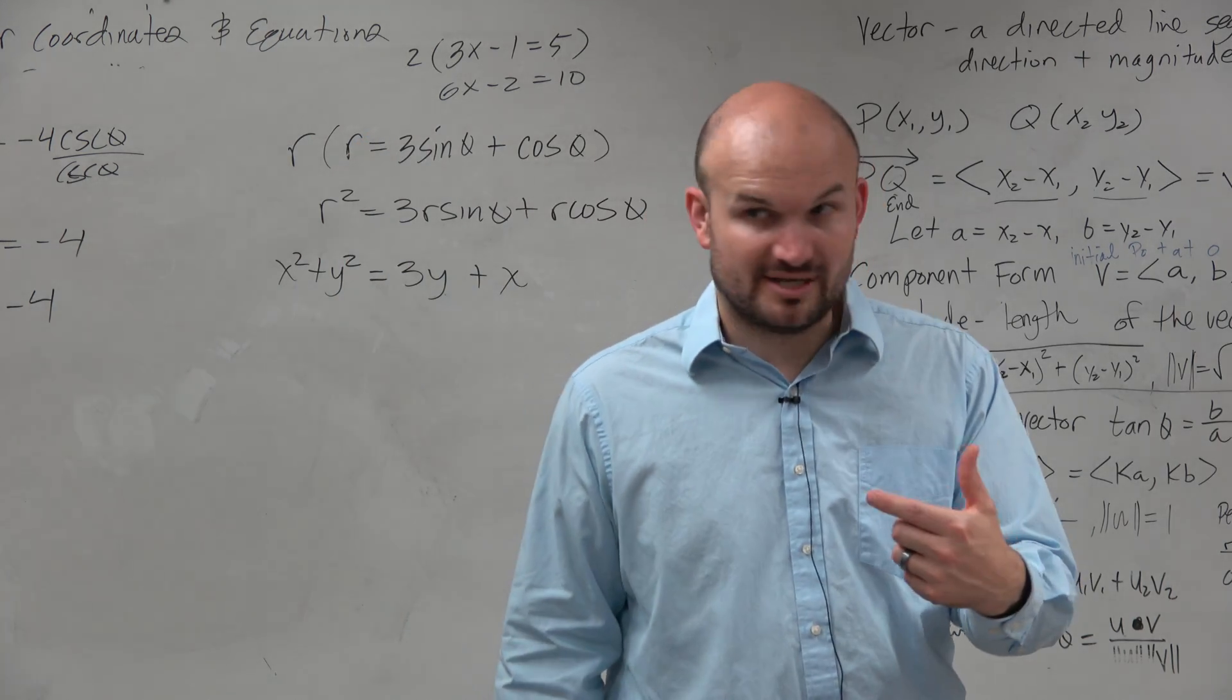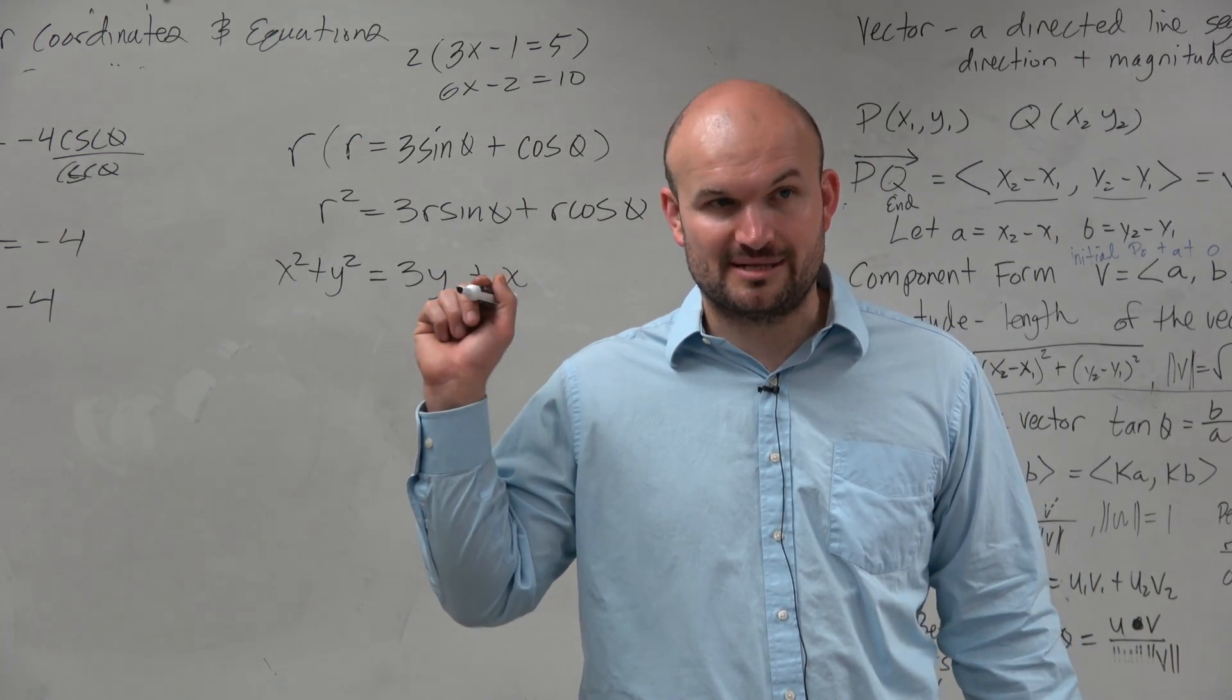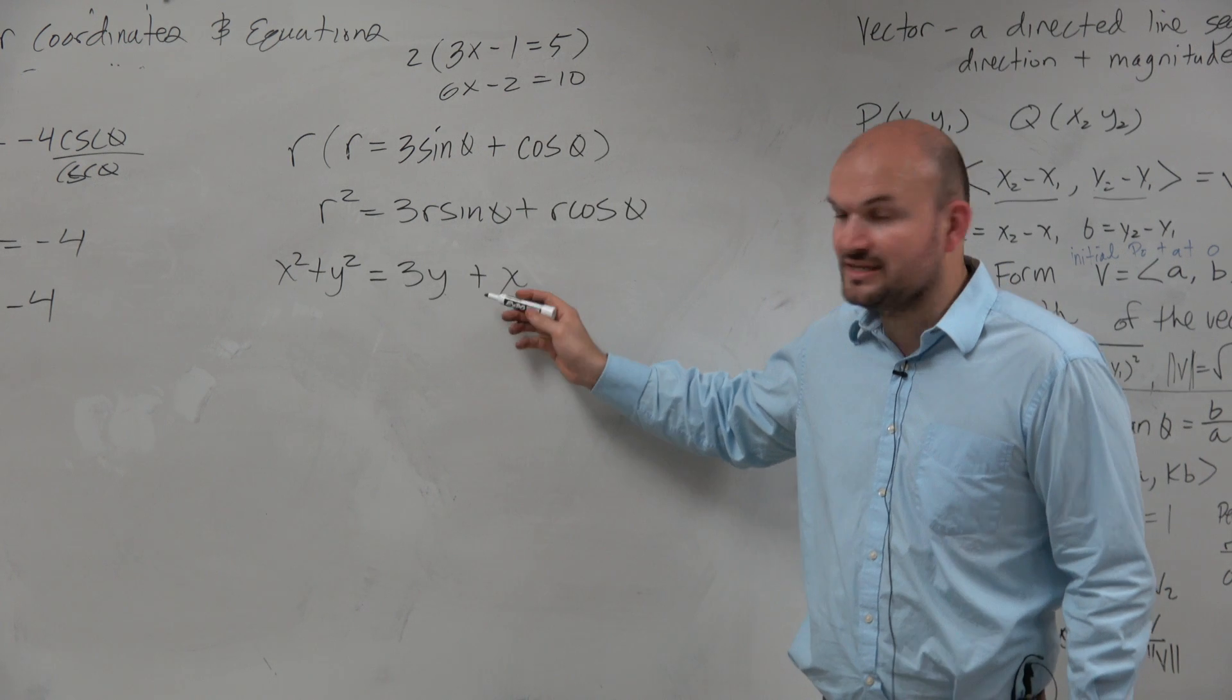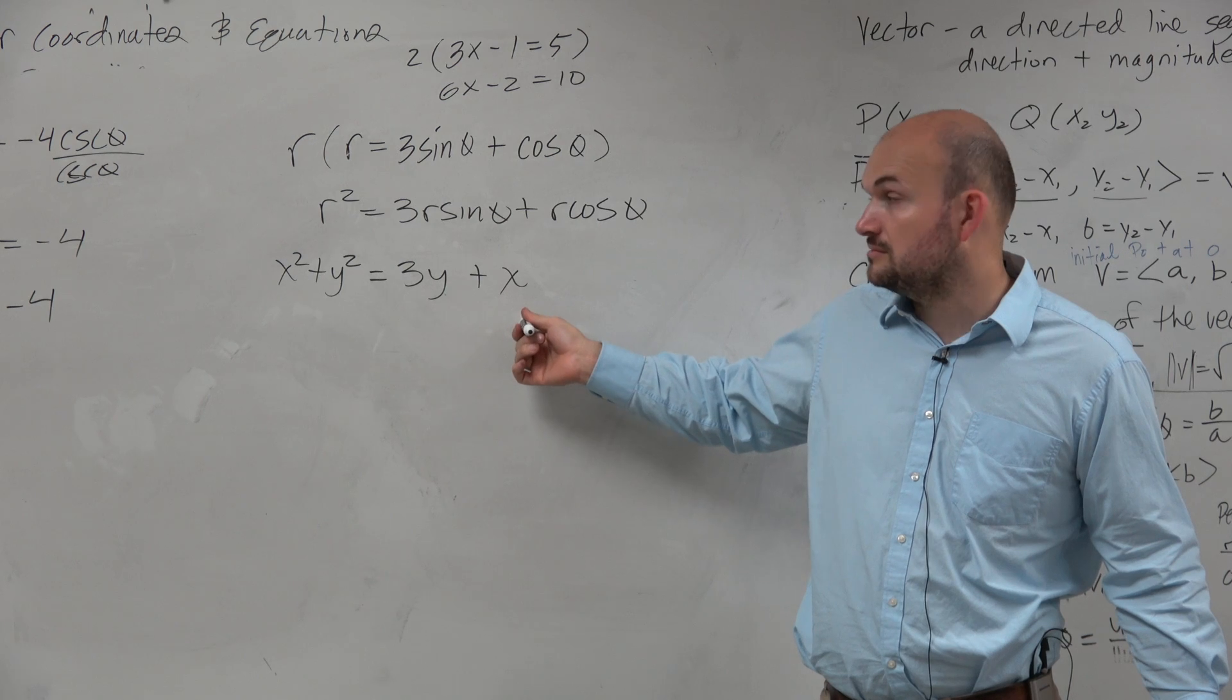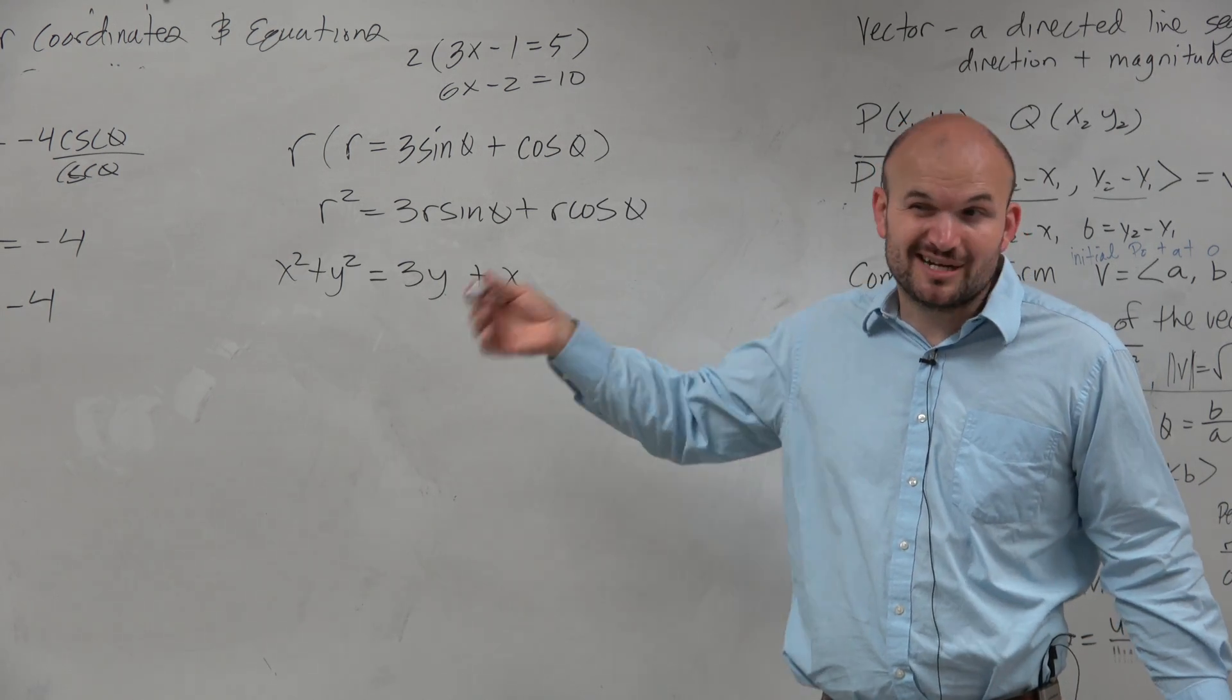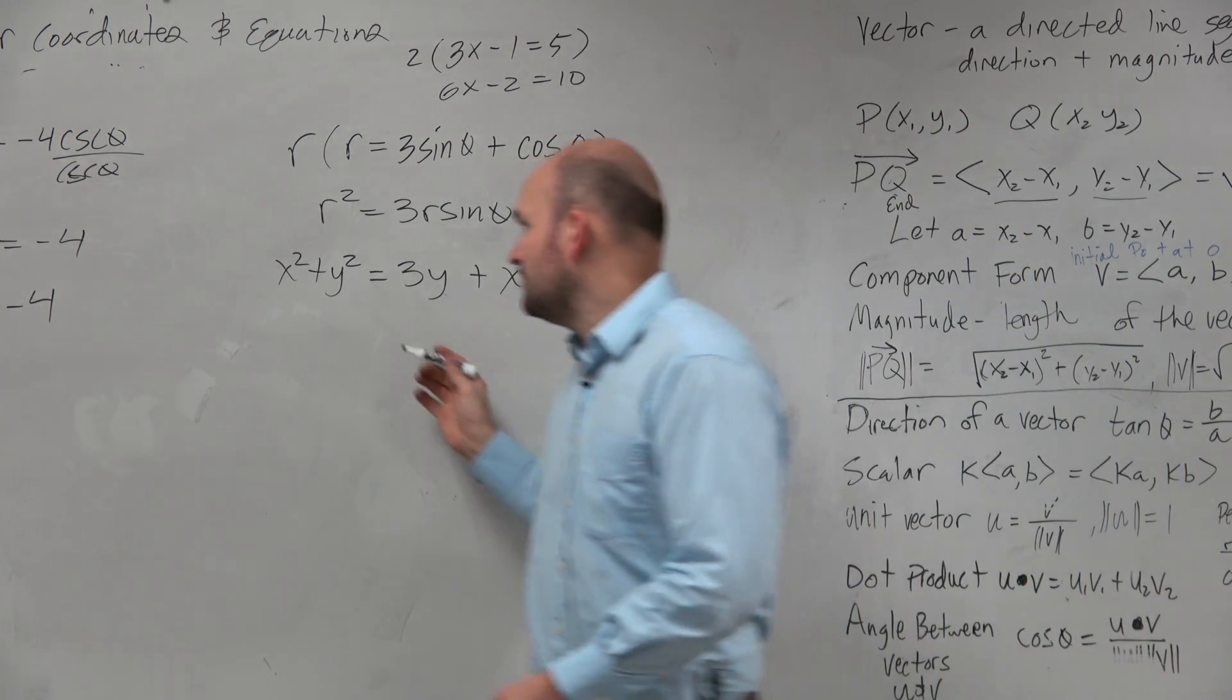However, on a multiple choice test, which you guys have, it's not going to be in that format. Because does anybody know what this graph is? You learn it in algebra 2 and conic sections. We're going to learn it next chapter. That's why it's a little bit ahead. But this is actually an ellipse.